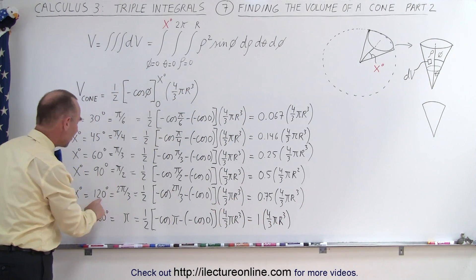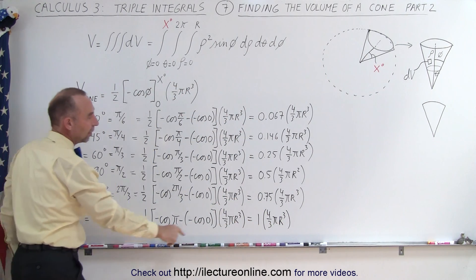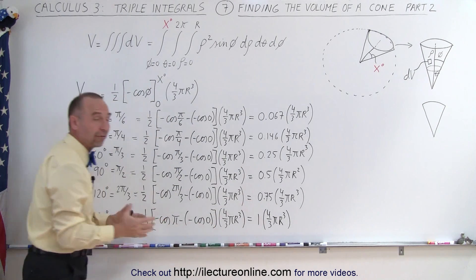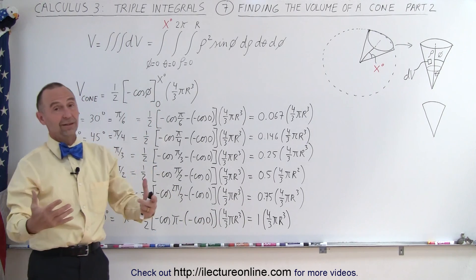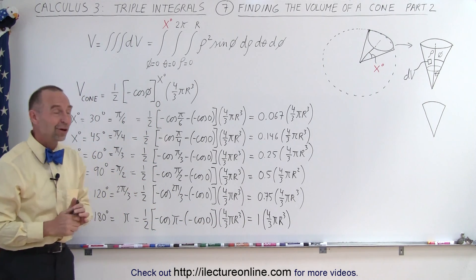After that as the angle gets even bigger—at 120 degrees now we're at 75% of the volume of the whole sphere and at 180 degrees we then have the volume of the whole sphere because then the cone is really the whole sphere.